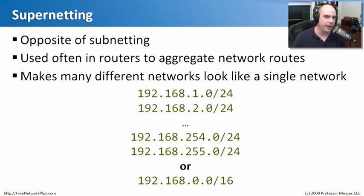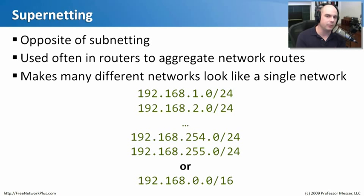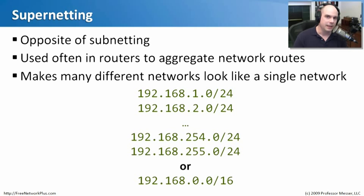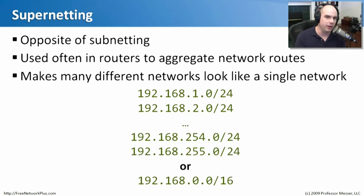We'll start our conversation with supernetting. We've talked in the past few videos about subnetting, where we take a single subnet and split it up into smaller chunks. Supernetting is really the opposite of that — we take a single network address and make it bigger. The reason you would do that is generally because you need to point to an aggregate route. Let's say on your network you have a lot of different IP addresses ranging from 192.168.1.0 all the way through to 192.168.255.0.